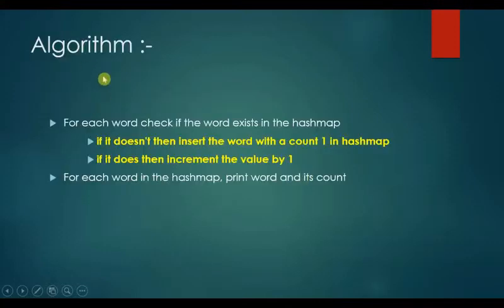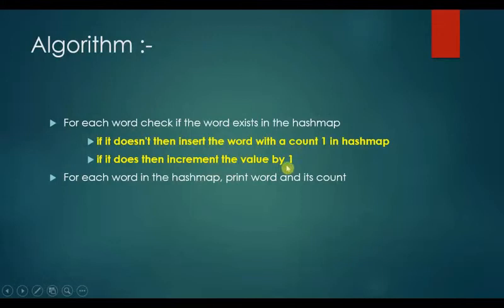For each word, check if the word exists in the HashMap. If it doesn't, then insert the word with a count of 1 in the HashMap. If it does, then increment the value by 1. For each word in the HashMap, print the word and its count.